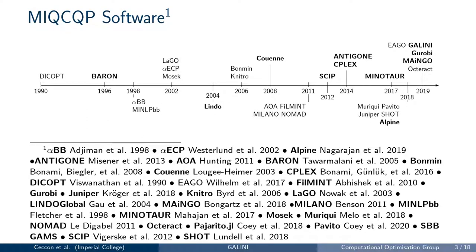The first software that could handle non-linear optimization problems was GAMS in 1990, since then more and more software was developed. This timeline of solvers includes solvers that can handle more complex non-linear expressions, not just quadratic expressions like Galini. In particular, Galini solves so-called non-convex optimization problems, that is, problems where the objective and constraints are possibly non-convex.